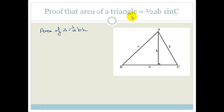Now we're going to prove to you that the area of the triangle can be given as a half AB sine C. So let me show you how we're going to do this. First of all, what I've given you here is a triangle, we've called it ABC.